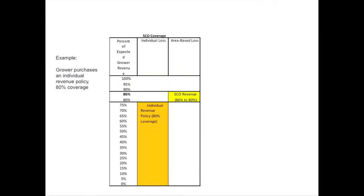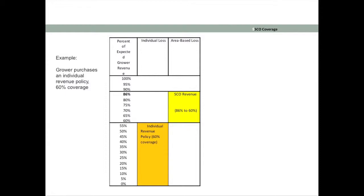This is a little different if we look at it. If you've got an 80% coverage underlying policy, this is going to cover up to 80%, and then SCO will go from 80% to 86%. Same thing if you've got a 60% policy — your underlying policy is going to come up to 60%, and then SCO will cover from 60% to 86%, leaving the producer with that gap from 86% to 100%.